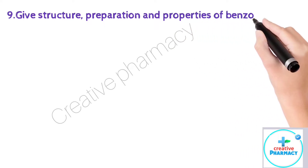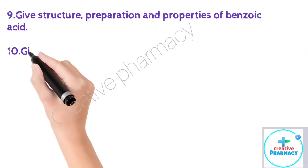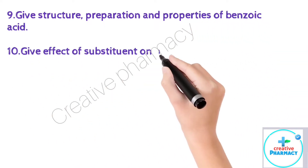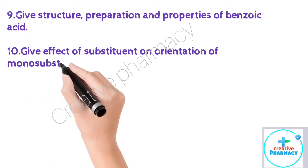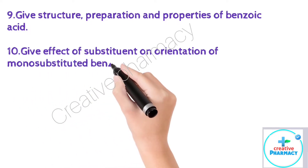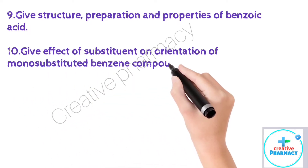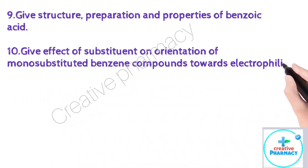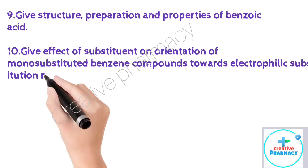Question 9: Give the structure, preparation, and properties of benzoic acid. Question 10: Give the effect of substituents on the orientation of monosubstituted benzene compounds towards electrophilic substitution reaction.